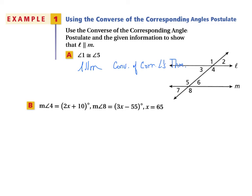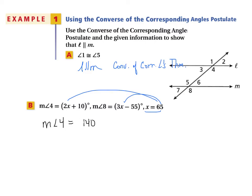In part B, we're given the measure of angle 4 equals 2x plus 10, the measure of angle 8 equals 3x minus 55, and x equals 65. Angle 4 and angle 8 are corresponding angles, so let's plug in x. By substitution, the measure of angle 4 is 2 times 65 plus 10, which gives 130 plus 10, which is 140 degrees. The measure of angle 8 is 3 times 65 minus 55, which also gives 140 degrees.